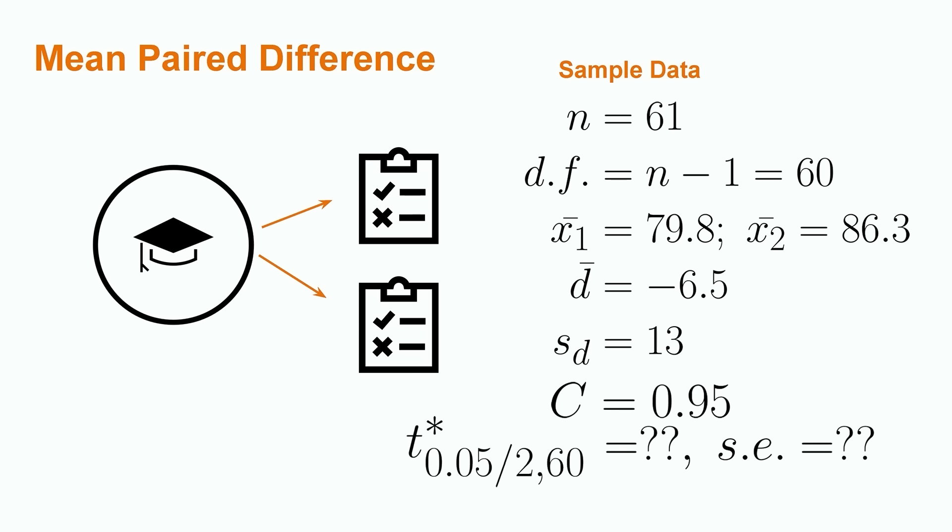In order to calculate the confidence interval, we will need to find the proper value of the t multiplier with a significance level of 0.05 and 60 degrees of freedom. The significance level of 0.05 is equal to 1 minus the confidence level of 0.95. Additionally, we will need to calculate the standard error. Let's get started with the t multiplier.